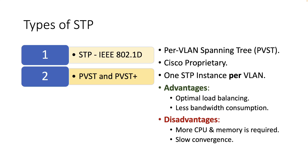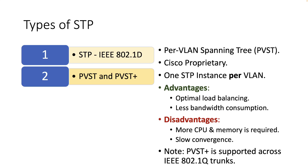However, CPU and memory requirements are high due to maintaining separate STP instances per VLAN, while the convergence time is per VLAN and it is slow, similar to the original STP. Finally, the main difference between PVST and PVST Plus is that the latter is supported across the IEEE 802.1Q trunks.